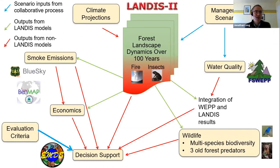This graphic shows the larger integrated modeling framework. Landis II is a process-based disturbance model — that's the central engine in a lot of the work that we're doing. It incorporates fire and bark beetles as well as climate projections. We built linkages out to other models to look at other resources including water quality, smoke emissions, economics, and wildlife habitat, which Angela will be talking about next. We also brought things together with an ecosystem management decision support tool to help assimilate all the different indicators and provide an overall summary picture.